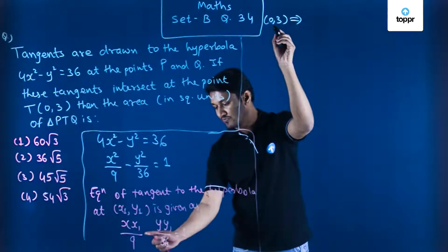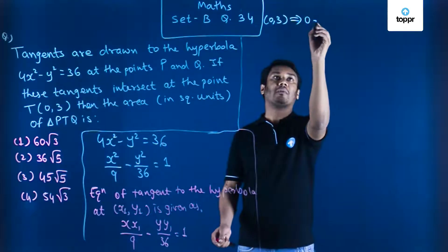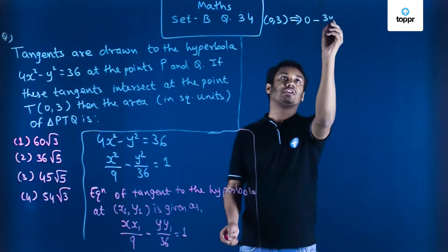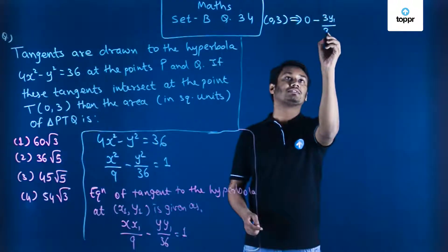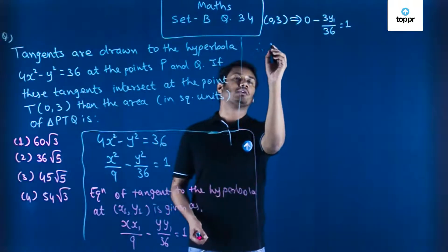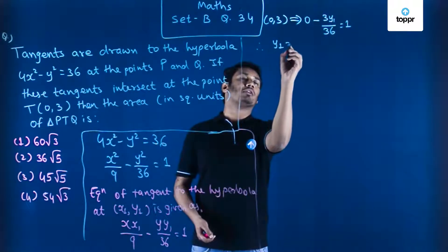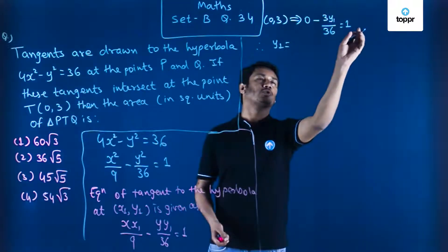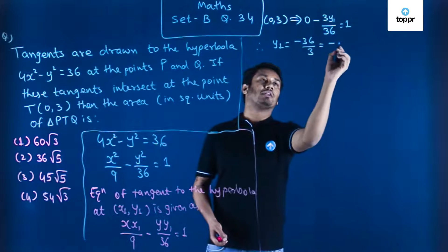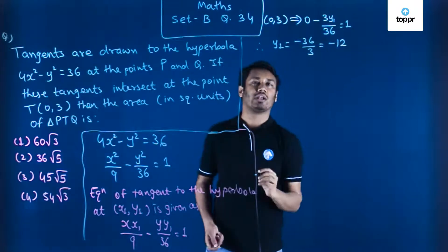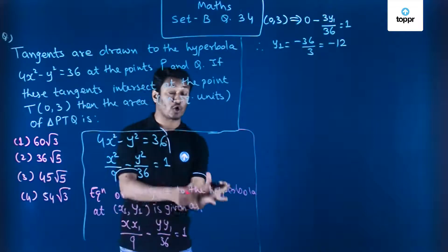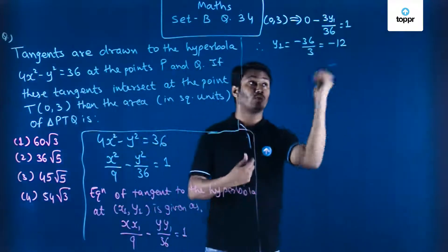Since the value of x is 0, the first term disappears. We get minus 3y₁/36 equal to 1. Solving this gives y₁ equal to minus 12. So we have the y-coordinate of the point at which we are drawing the tangent: y₁ = -12.